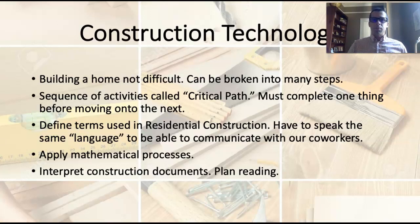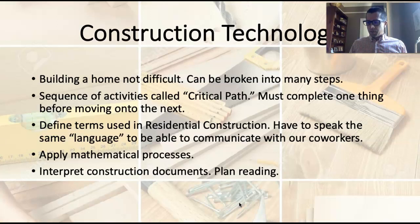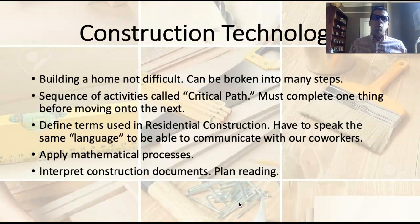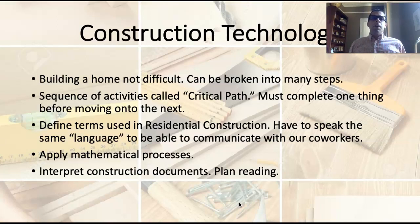Building a home is not difficult after you've done it a few times. When we break it into different components, understand what those components are, how they fit together, and understand the sequence of things that goes into building a house — we call that the critical path. When we understand what needs to happen before the next step can happen, we're following the critical path. We don't want to insulate and drywall a house before the roof goes on, because it might rain and the drywall and insulation could get soaked. There are just things that are supposed to happen in a certain order.